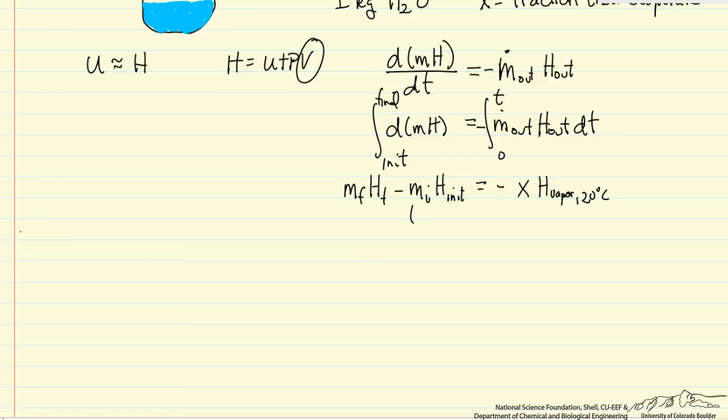Now remember this value m, which is 1, and the final mass then is 1 minus x. So 1 minus x times the enthalpy of ice at 0 degrees C.